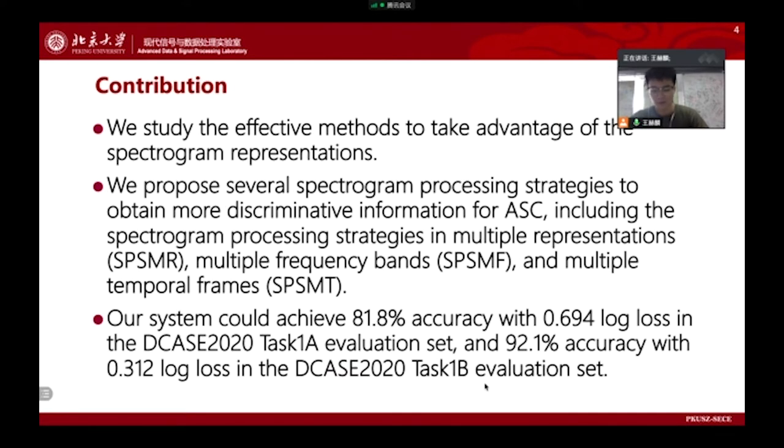In this paper, we study effective methods to take advantage of the spectrogram representations. Based on convolutional neural networks, we propose several spectrogram processing strategies to obtain more discriminative information for ASC, including the spectrogram processing strategies in multiple representations called SPSMR, multiple frequency bands called SPSMF, and multiple temporal frames called SPSMT.